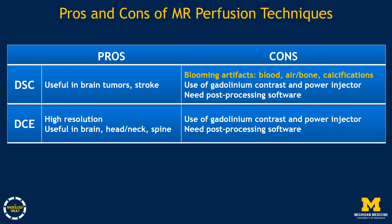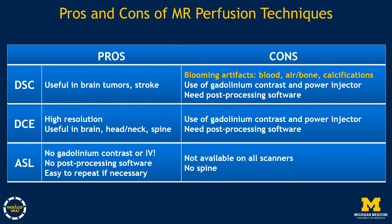DCE is the same in that it requires gadolinium and also needs post-processing software. However, it is very high in resolution and can be utilized in brain, head and neck, spine, or multiple body parts. ASL does not require gadolinium contrast or IV access, does not require post-processing software, and is easy to repeat if necessary because it does not require reinjection of gadolinium. However, the cons of ASL are that it is not available on all scanners and it cannot be performed on spine imaging.